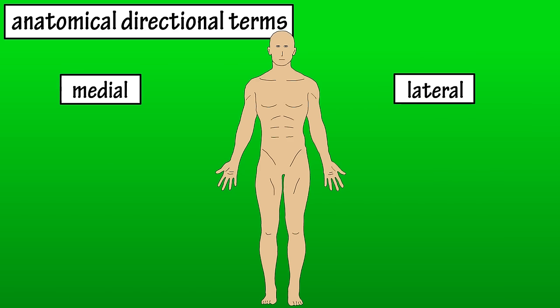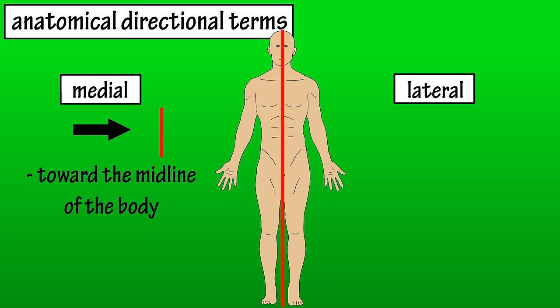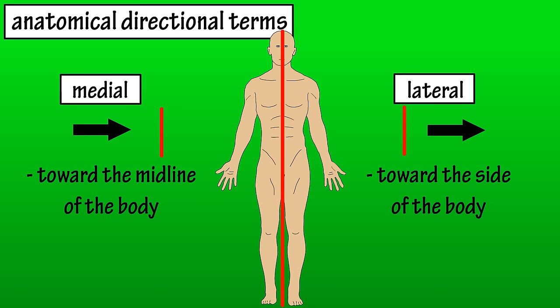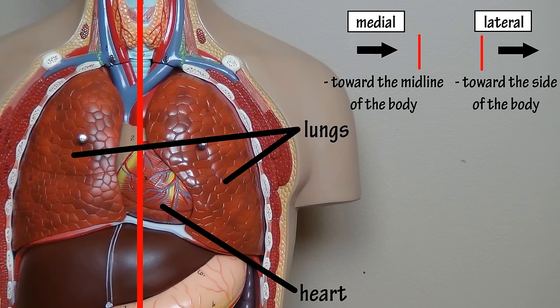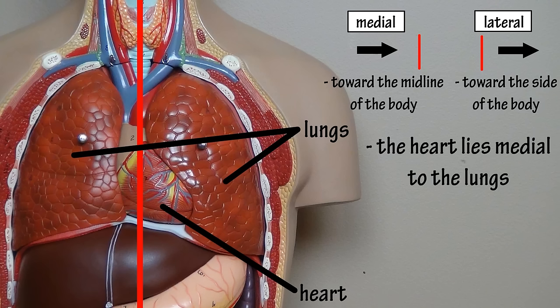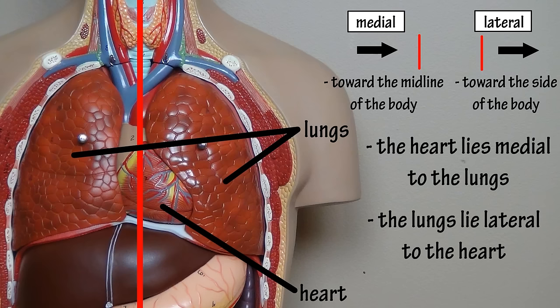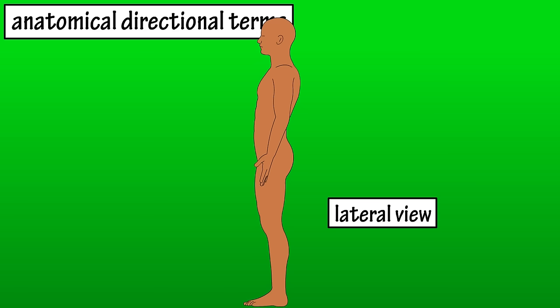Medial and lateral are another set of directional terms. Medial means toward the midline of the body, and lateral means toward the side of the body, or away from the midline of the body, where the midline is an imaginary line that divides the body into left and right halves. So we would say that the heart lies medial to the lungs, or the lungs lie lateral to the heart. Lateral can also be used to describe how you're looking at the body — it can be viewed from the lateral view, meaning looking at the body from the side.